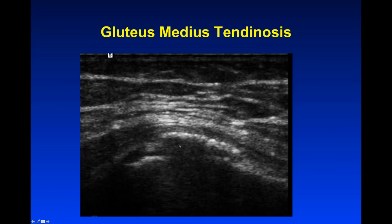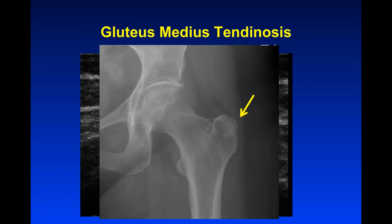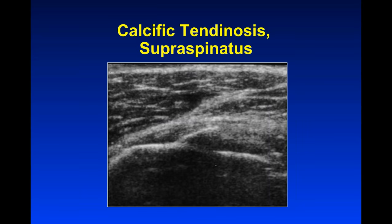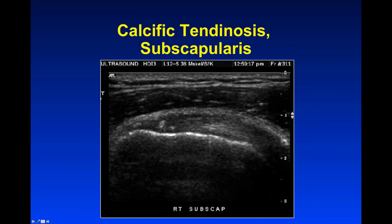Calcifications within a tendon look like calcifications elsewhere in the body — very bright — and depending on how hard they are, they may or may not shadow the beam. This is the gluteus medius tendon of the lateral thigh, with a very bright shadowing structure superficially, confirmed by the plain film showing a calcification sitting within the tendon on top of the bone. Here's also a calcification within the rotator cuff, echogenic with posterior acoustic shadowing. Sometimes echogenic areas are too small or too soft to create a shadow, so you just see bright foci with no shadowing — beware that calcifications don't always shadow.